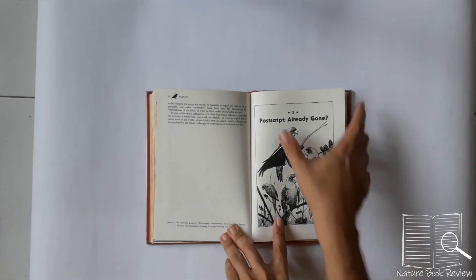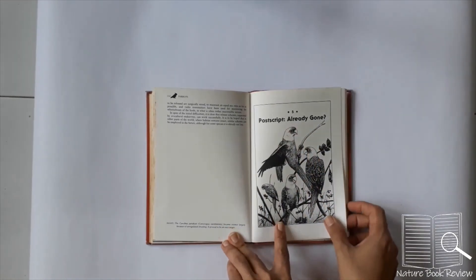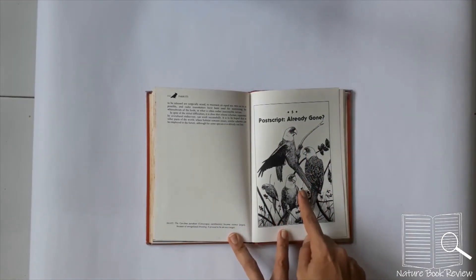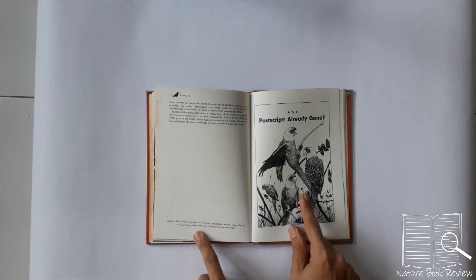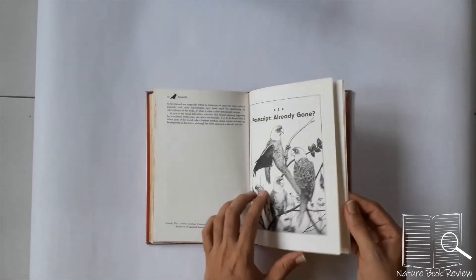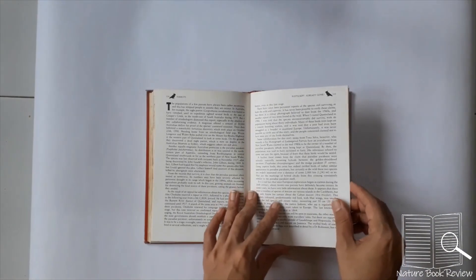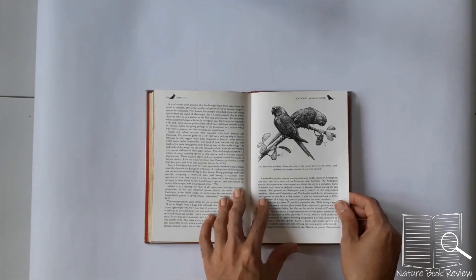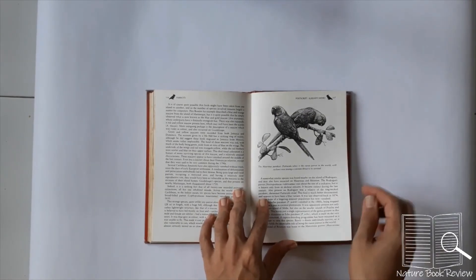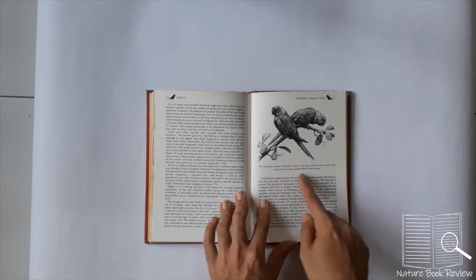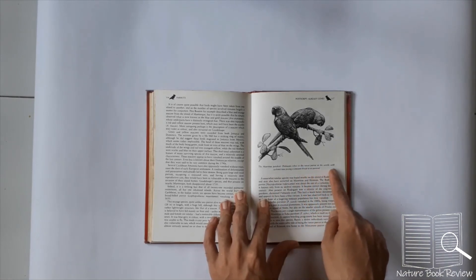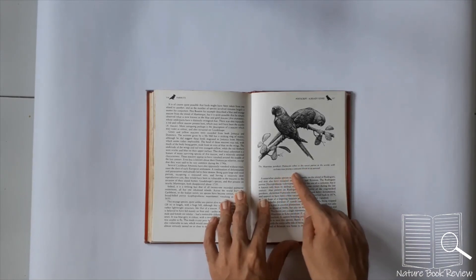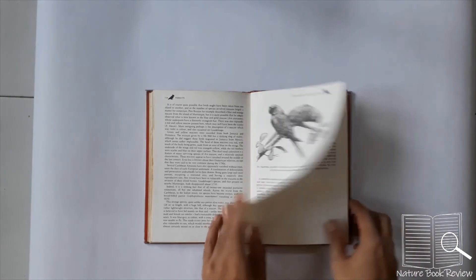Then postscript - already gone. So this is a Carolina parakeet. It became extinct largely because of unregulated shooting. It was an easy target. The Mauritius parakeet is the rarest parrot in the world with the cyclones now posing a constant threat to their survival.